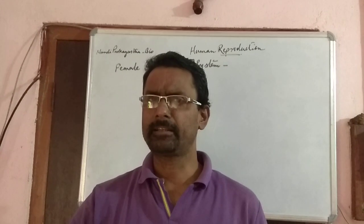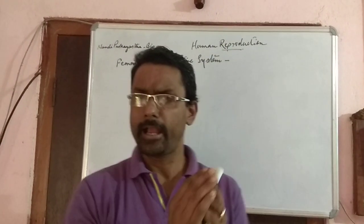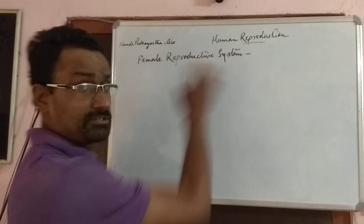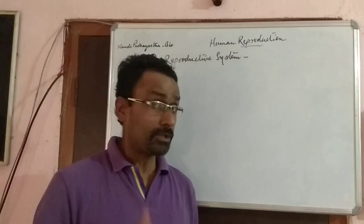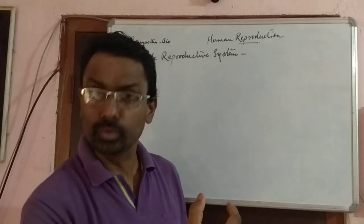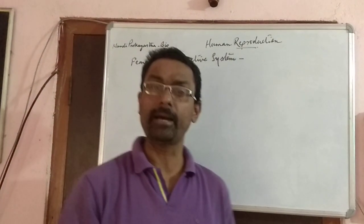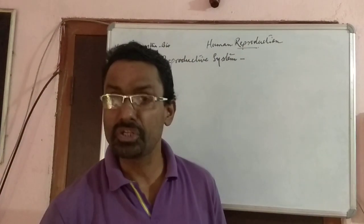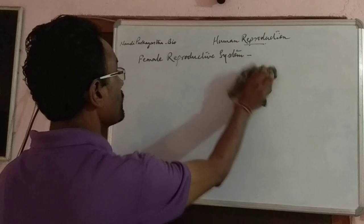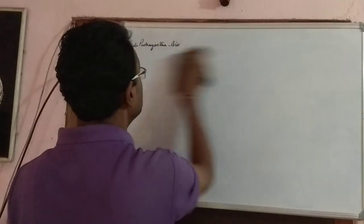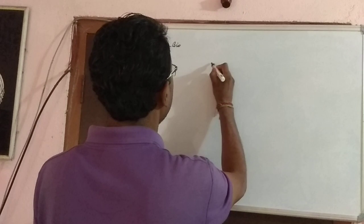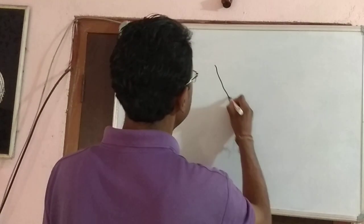Now let's get back to another part of human reproduction — the female reproductive system. We will be understanding it through a diagram along with explanation. So quickly, let's get back to the diagram. The diagram is pretty easy, you can do it.